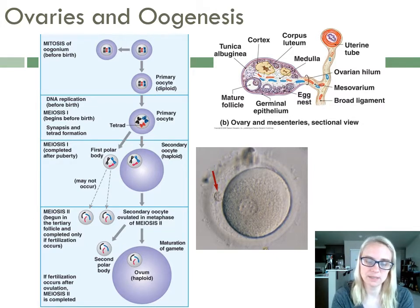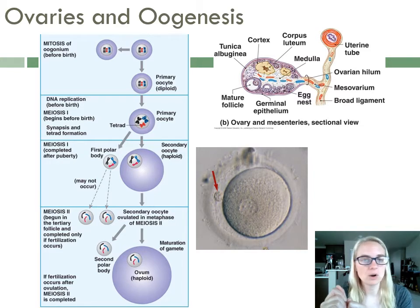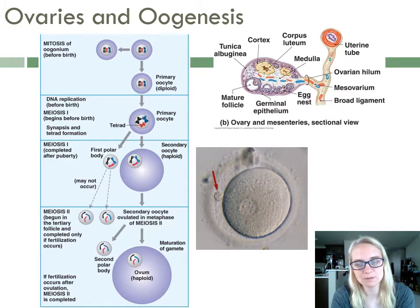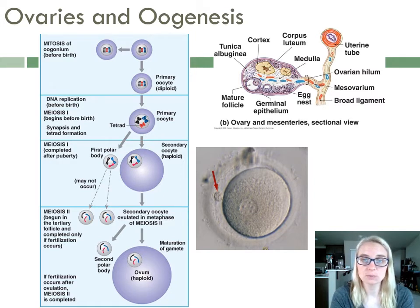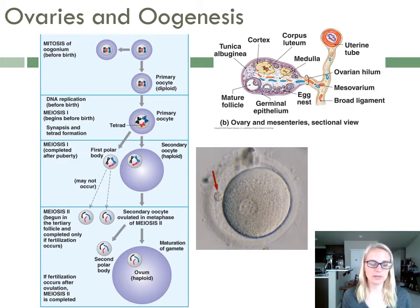When you see pictures like this — also in your lab manual there's a good picture of the ovary — know that when you're looking at this, this is not all at once. This is a whole 28-day cycle pictured in one picture. So you would not see all of these things at any one time. They're just showing you all of these structures in one picture so you don't have to see 28 individual pictures.